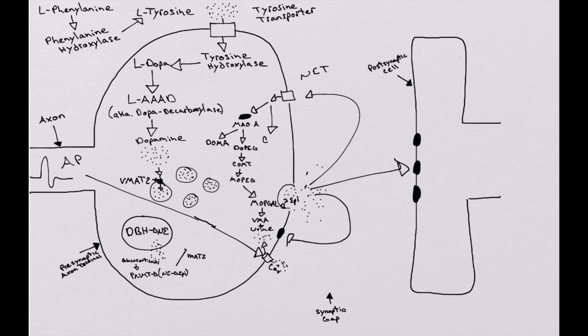Just like we talked about in the noradrenergic video, this is helpful in the diagnosis. If we're going to do a urine test on VMA, it's helpful in diagnosis of pheochromocytomas or neuroblastomas.